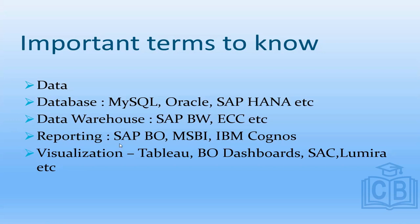Examples of reporting tools include SAP Business Objects. Each major company has one: Microsoft has MSBI, IBM has Cognos, and SAP has SAP Business Objects. Visualization tools show data in a more creative and visual manner with charts and graphs and more interactivity, useful for high-end users like CEOs and CFOs who can see data statistics on iPads and tablets. Examples include Tableau, Business Objects Dashboards, SAP Analytics Cloud (SAC), and Lumira.